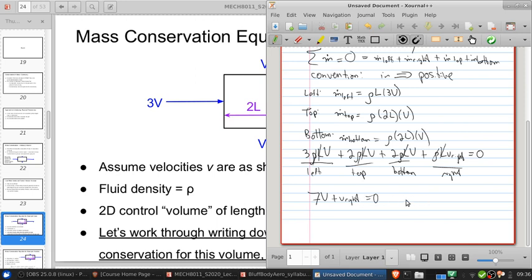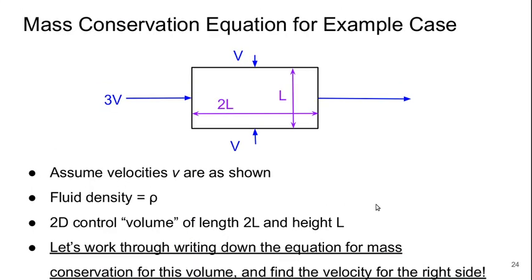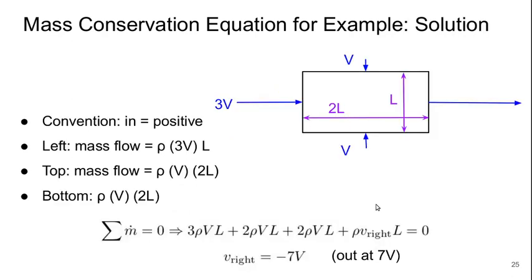That's exactly what we see here, summarized in the slide. The right side velocity is 7V outwards.